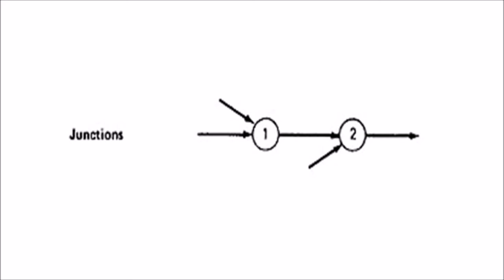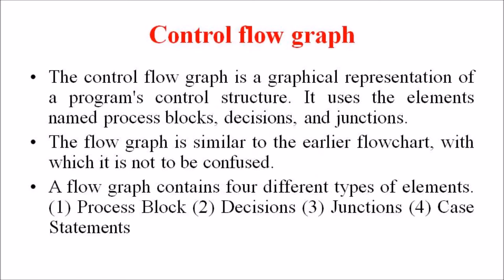In the graphical representation, a junction is represented as a circular representation with the processes numbered and two or more arrows coming towards the circle which indicates that process is having a junction point.